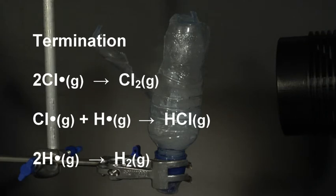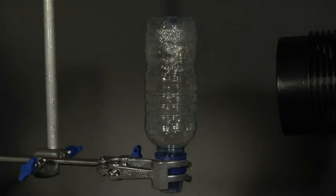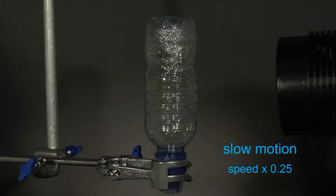Chlorine molecules form atoms or radicals when exposed to bright sunlight. In this demonstration, the flash gun provides sufficient energy to break the chlorine-chlorine bonds homolytically. BOOM!